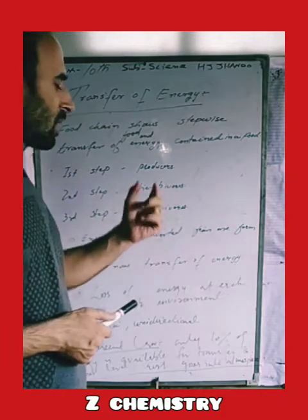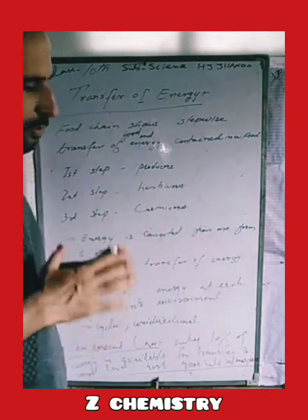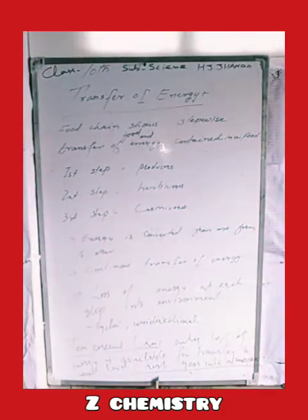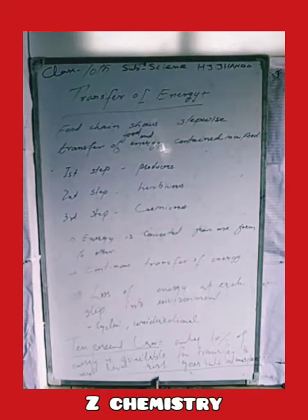The first step in the food chain is the producers. Producers make their own food using raw materials from the atmosphere. This process is called photosynthesis.